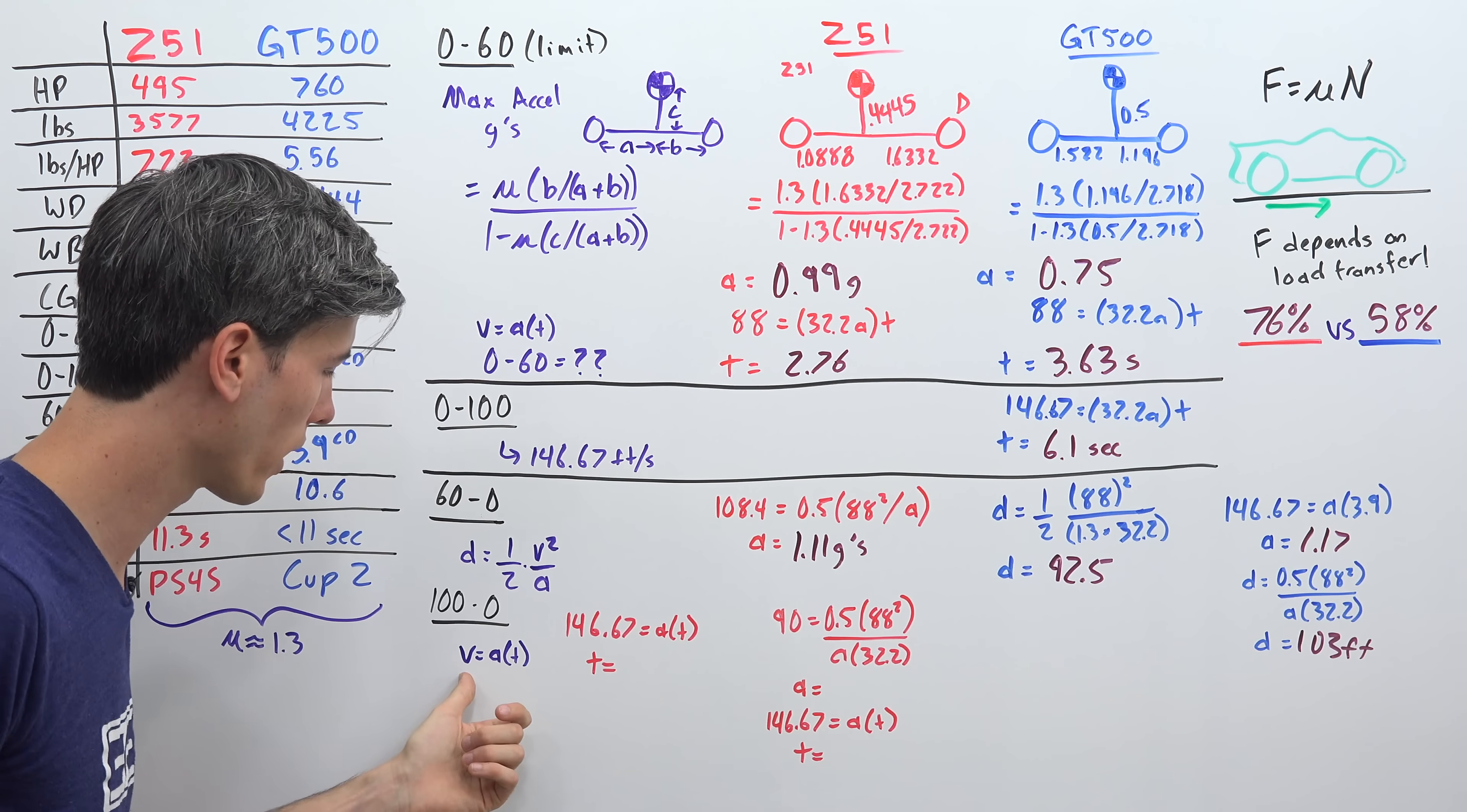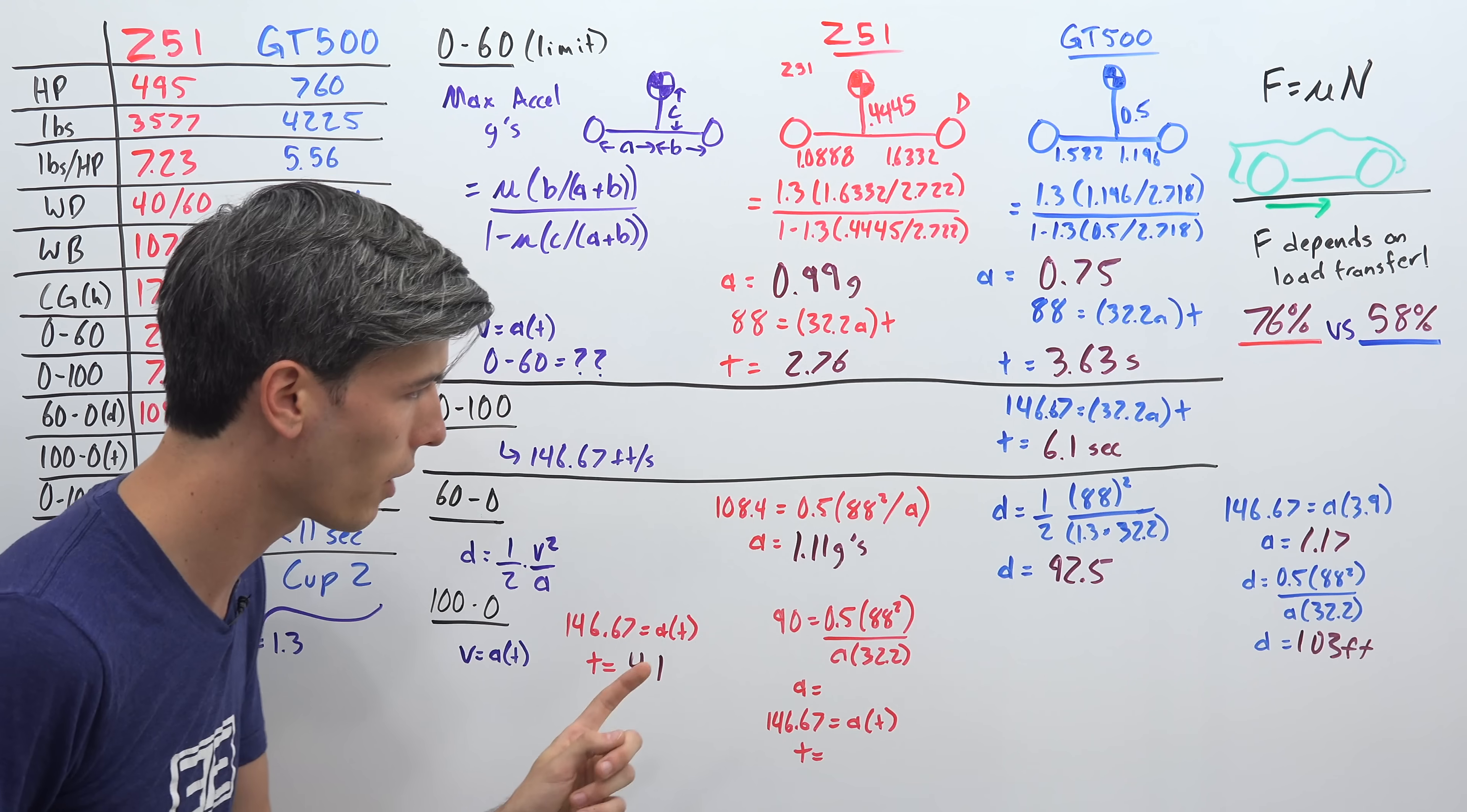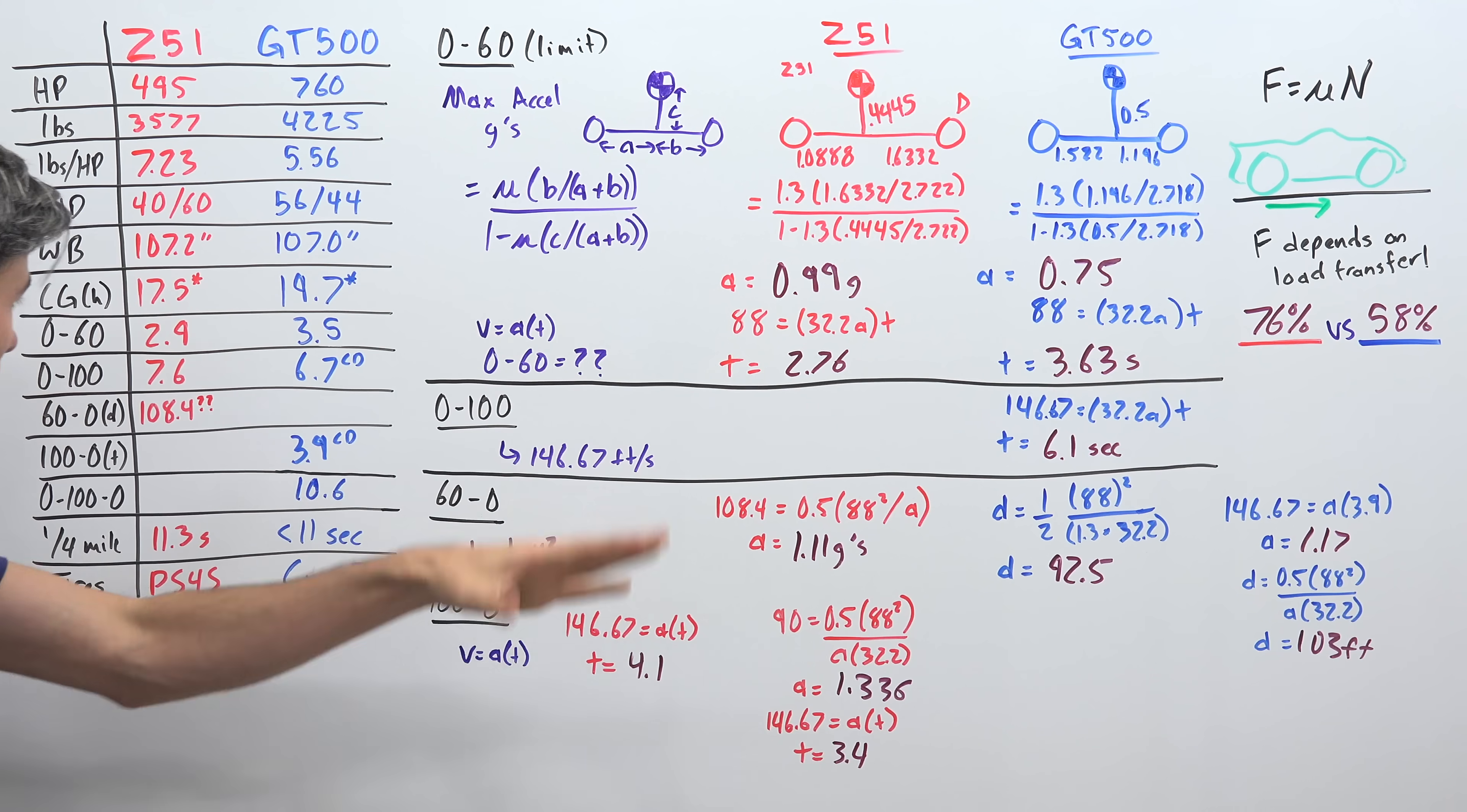Now we want to figure out how much time it takes to decelerate from 100 miles per hour back down to 0 miles per hour. So we can once again go back to our equation, velocity equals acceleration times time, and if we use Chevy's acceleration number for deceleration, their peak braking of 1.11 G's, that would give us 100 miles per hour down to 0 miles per hour in 4.1 seconds. If we use that Motor Trend test figure of 90 feet braking distance from 60 miles per hour, that gives us a peak deceleration of 1.336 G's, and then we can use this acceleration number to figure out how much time from 100 miles per hour, in other words, 146.67 feet per second. It would take to slow to 0, and that would be 3.4 seconds.